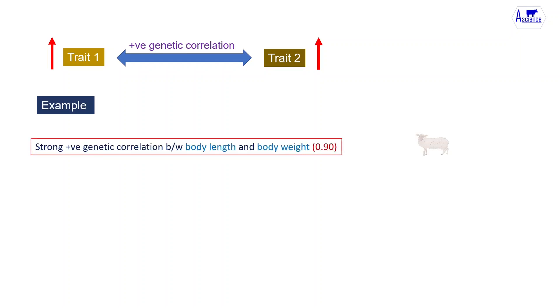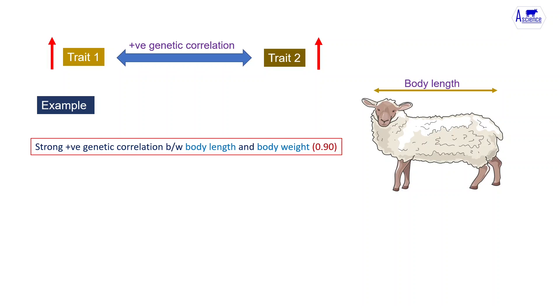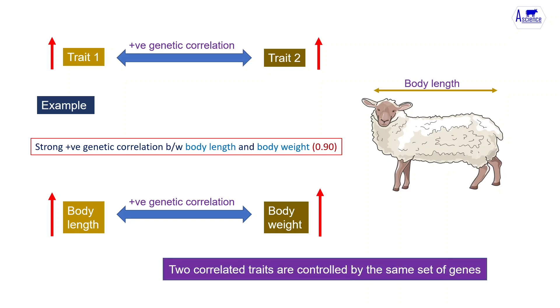If there is a positive genetic correlation between two traits then an increase in one trait causes an increase in the correlated trait. For example, there is a strong positive genetic correlation between body length and body weight in sheep that is about 0.9, which means an increase in the body length increases body weight. It also means that these traits are controlled by the same set of genes.